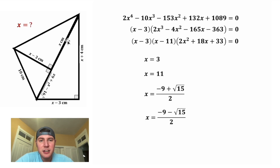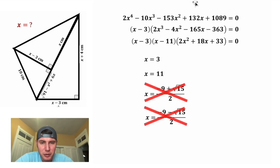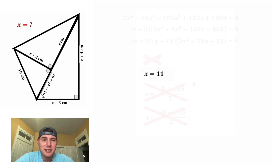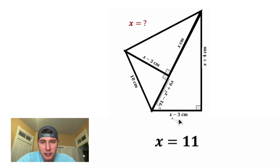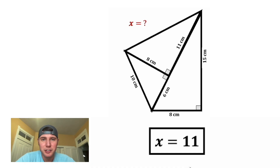To check our solutions, all side lengths must be positive. For x equals negative 9 minus root 15, this is a negative number — not possible. And negative 9 plus root 15 is also negative — not possible either. For x equals 3, plugging in gives a side length of 0 — also not valid. The only remaining solution is x equals 11. Plugging 11 in, we get an 8-15-17 right triangle and a 6-8-10 right triangle, both valid. So x equals 11 is the answer.